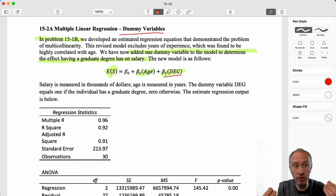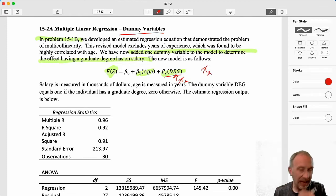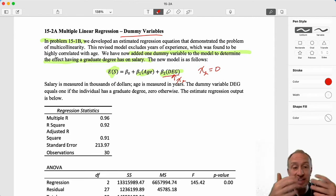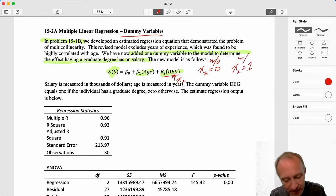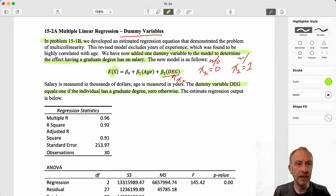In order to code that non-numerical information, we take this dummy, which is really our x2, and we say if you do not have a degree, then we define x2 or give x2 the value of zero. So this is without the degree. x2 equals one with the degree. This is coded as equal one if you have it, zero otherwise. If you're doing this in Microsoft Excel or any other statistical program, you cannot have a column of data that is yes or no, or has a degree, does not have a degree. You can't actually have non-numerical data in there.